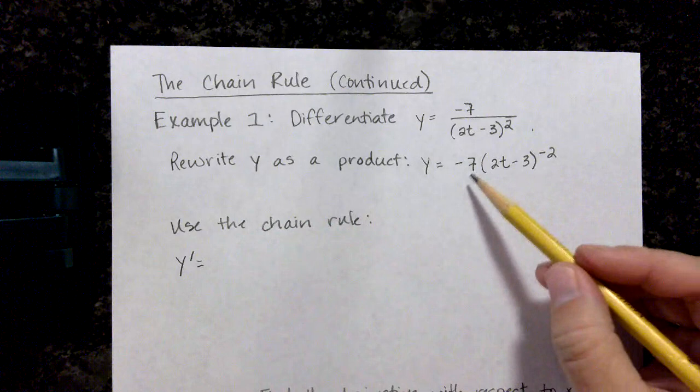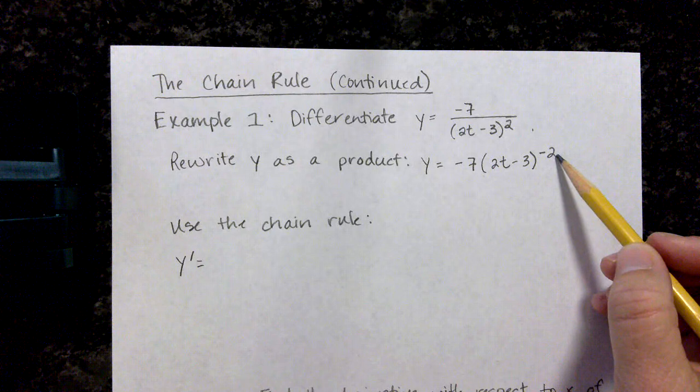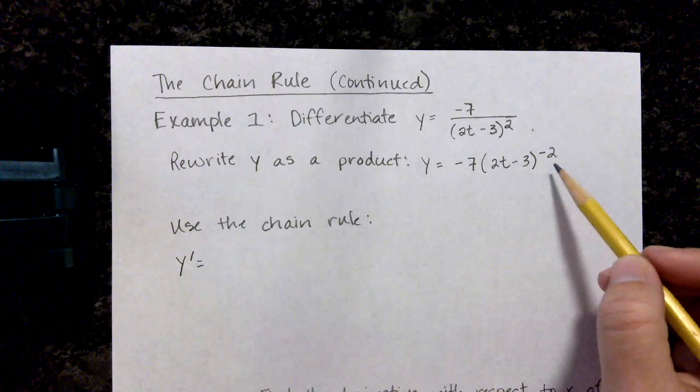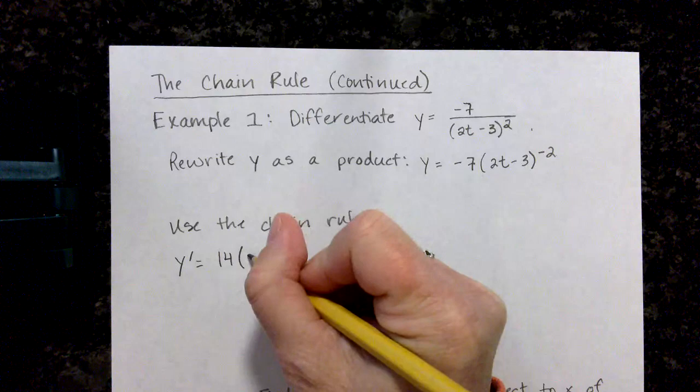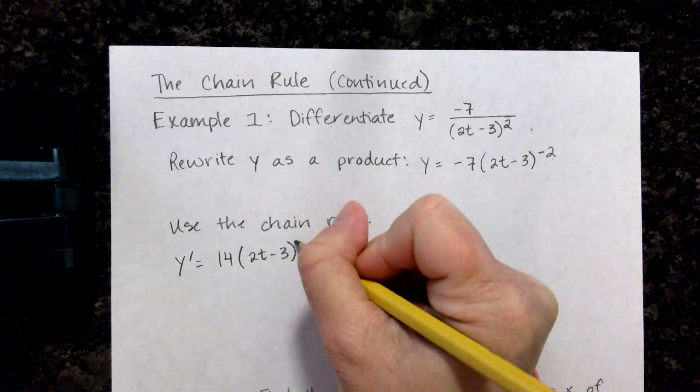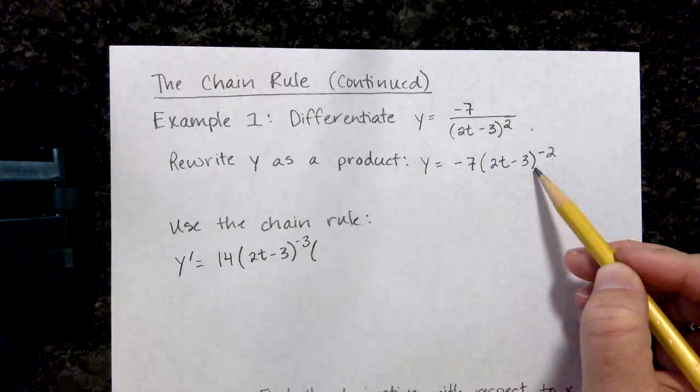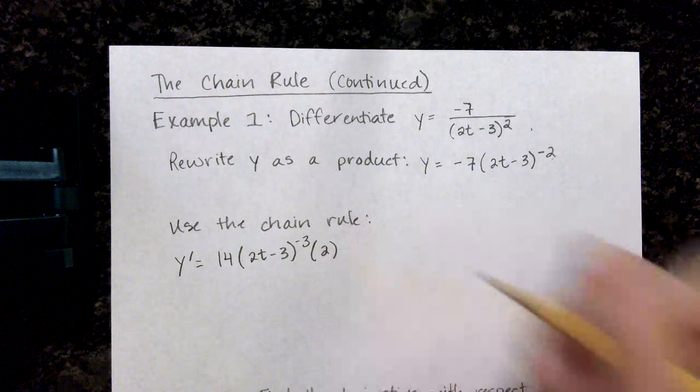So y prime, I can see that I have negative 7 and then something to the negative 2 power. My power rule says I can take the exponent and multiply it by the coefficient. So negative 2 times negative 7 is 14. Then I'm going to take the expression and lower the exponent by 1, so this would be negative 3, and then I have to multiply by the derivative of the inside. The derivative of 2t minus 3 is 2.